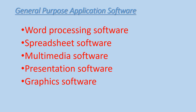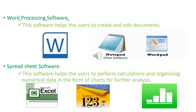General purpose application software is designed to meet the general needs of a user. Common examples include word processing software, spreadsheet software, multimedia software, presentation software and graphic software. Word processor is an application software that helps the user create and edit documents. Examples are Microsoft Word, Notepad and WordPad. A word processor is used by teachers for making timetables, by business people for making business reports, and by students for typing essays or letters.